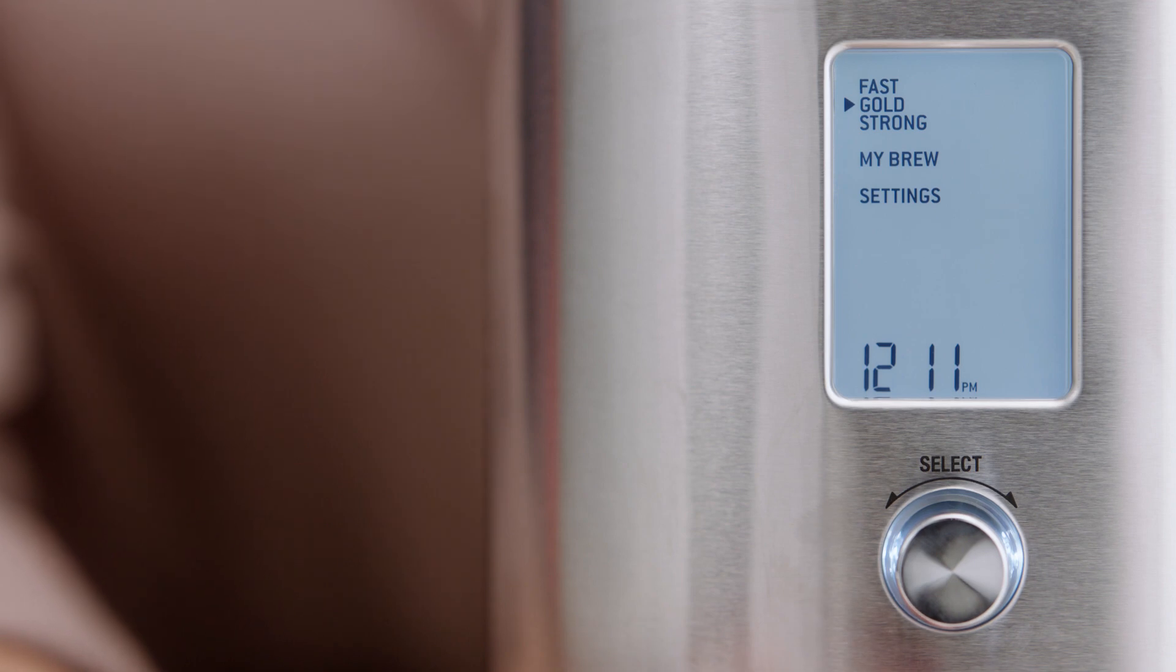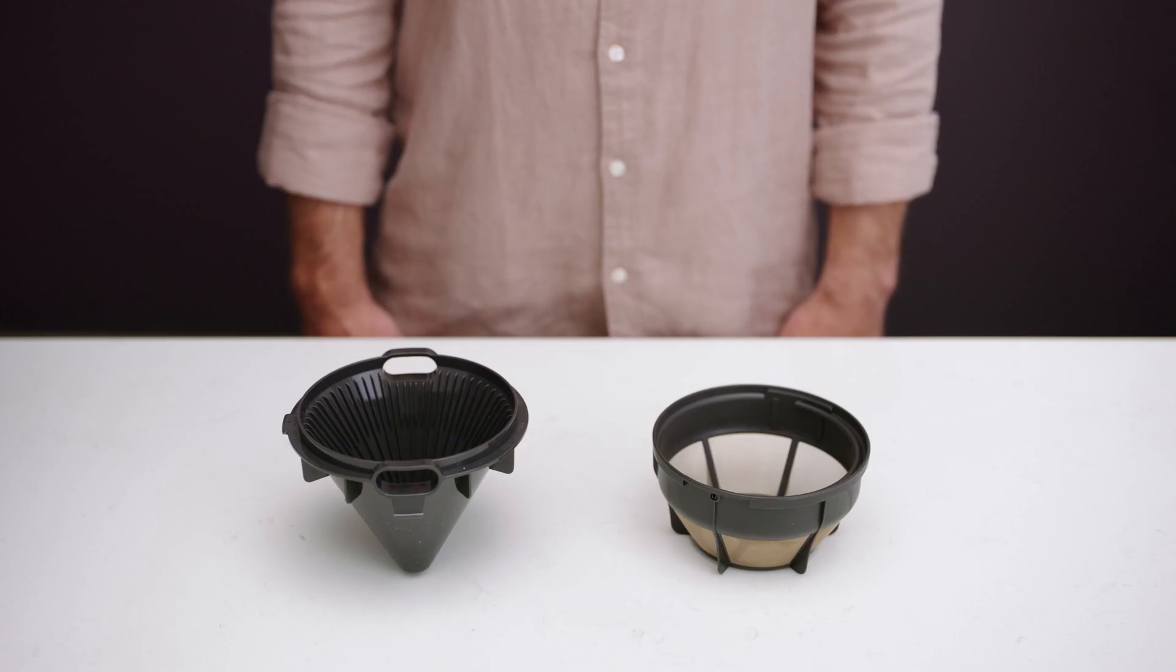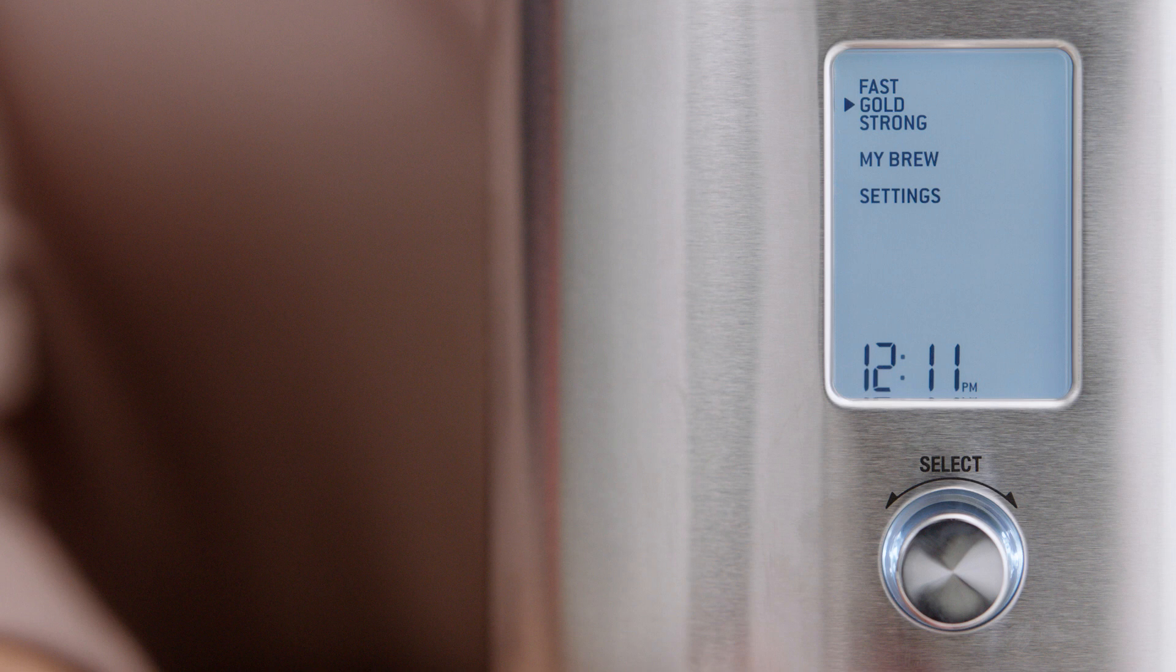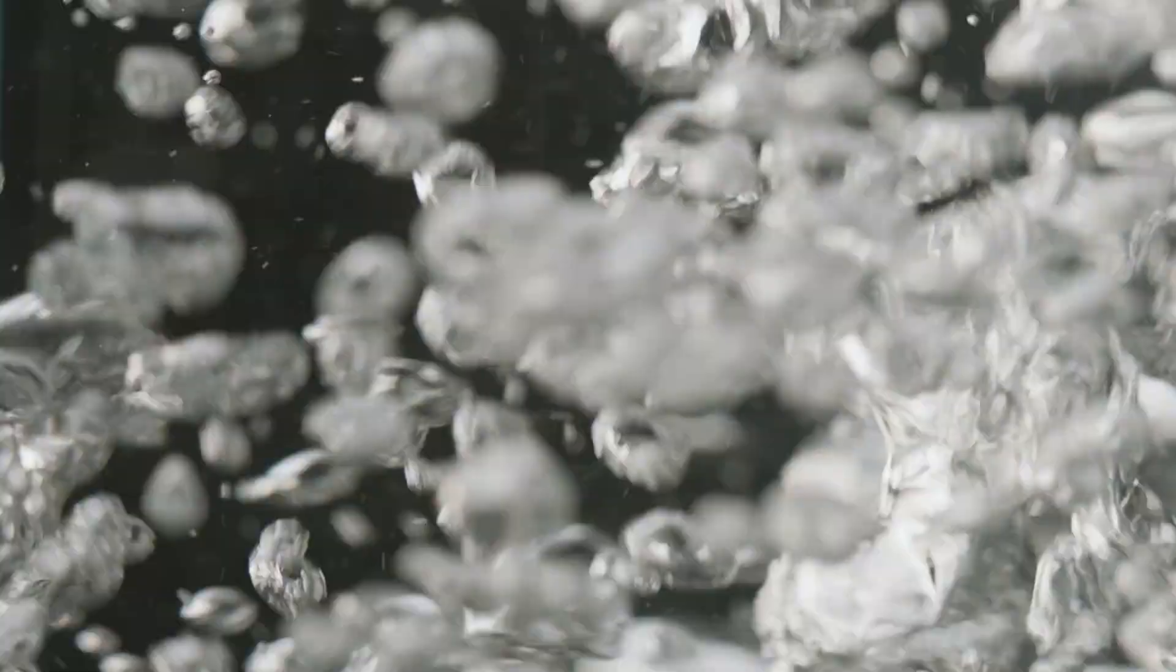Let's select the gold mode to get started. You'll notice the precision brewer comes with dual filter baskets with different shapes to ensure you achieve the perfect coffee based on roast type and coffee modes. For gold mode, we'll use the cone filter basket. Gold mode has been certified by the SCA, Specialty Coffee Association, and meets their rigorous technical requirements, which includes precise water temperature and brew time.